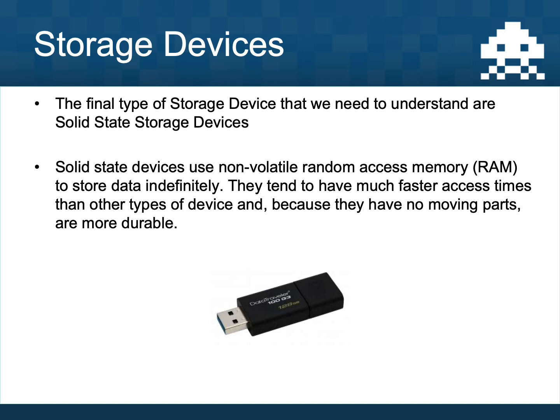The final type of storage device are solid state storage devices — the most modern type. They use non-volatile RAM memory, meaning RAM that can remember information even when switched off. They are very, very fast and have no moving parts because they work with electricity. An example is a USB stick, but also an SSD — solid state drive — which you may have heard of in posh laptops like the MacBook. SSDs are also used in the PlayStation 5, and that's what makes games so quick to load.